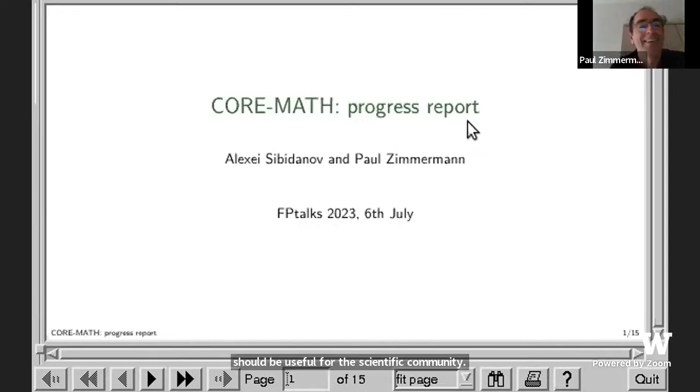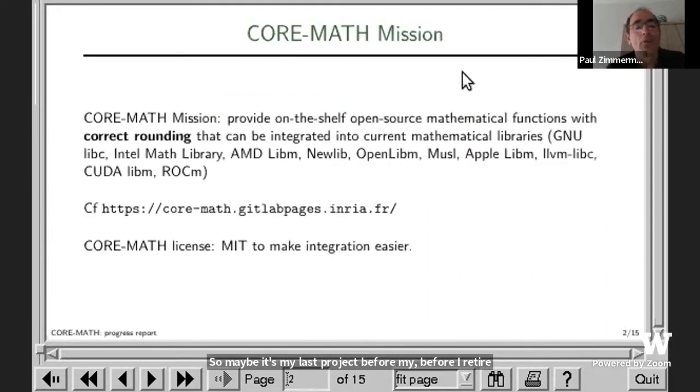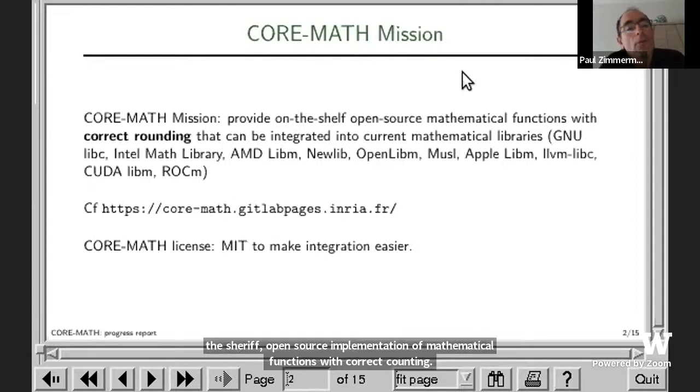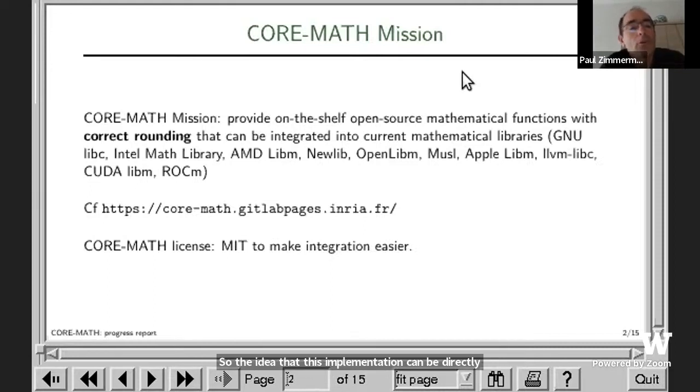The mission of this project is to provide off-the-shelf open source implementation of mathematical functions with correct rounding. So the idea is that this implementation can be directly integrated into current mathematical libraries. This is not a new mathematical library. The goal of CORE-MATH is to die after the routines have been integrated into other mathematical libraries, and so we choose an MIT license to make integration easier.